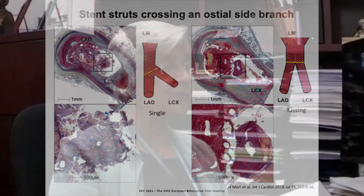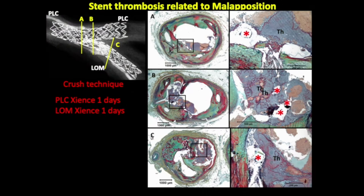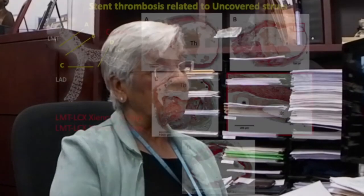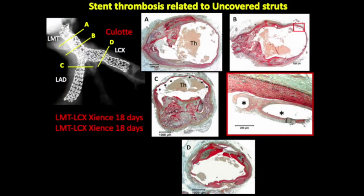Here is an example of a crush technique that has led to stent thrombosis purely because of malapposition. The struts are shown in red — they are malapposed. There's an underlying plaque and luminal thrombus. Here's another example of uncovered struts that may also lead to stent thrombosis. The asterisks point to all these uncovered struts. This occurred 18 days after implantation in the left main, circumflex, and left anterior descending artery.